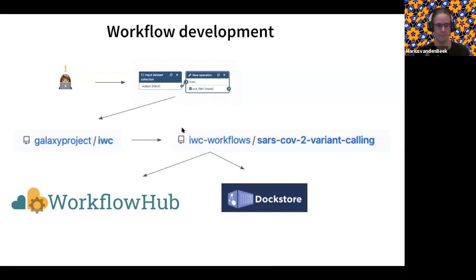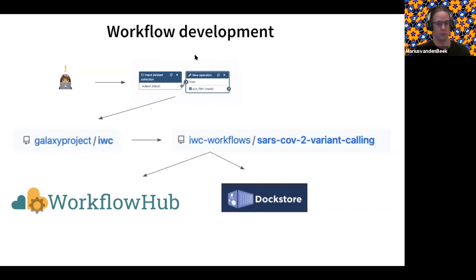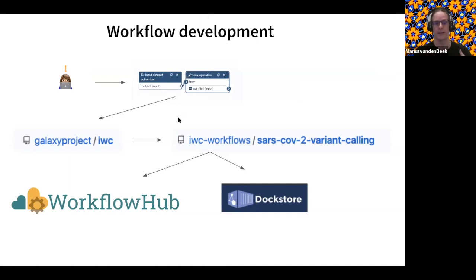From the IWC, we can also automatically distribute workflows to any TRS server. These workflow hubs are great — we can use them interchangeably and publish to all of them. This will make it much easier to go beyond just publishing a workflow on a Galaxy instance, publish to a central place, avoid exchanging workflow files by email, and have a strong reference we can use to publish links, create DOIs, and so on.